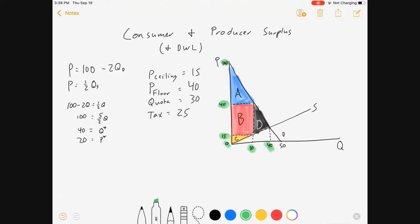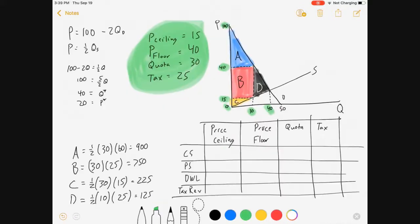These six green dots are the only things you need to answer every question about all of this. So without any regard for what policy I'm looking at, I can calculate the areas A, B, C, and D.